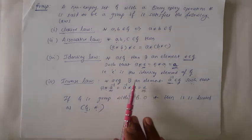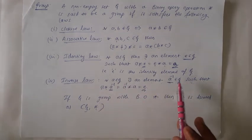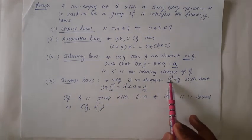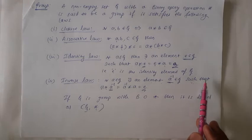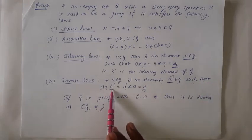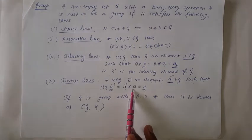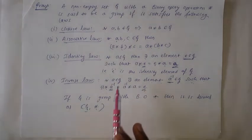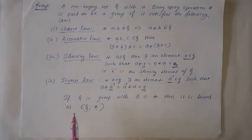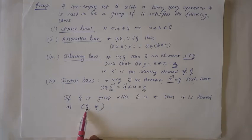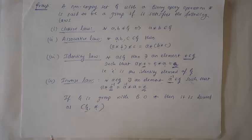Then the Inverse law: for all a belonging to G, there exists an element a-inverse belonging to G such that a star a-inverse equal to a-inverse star a is equal to e. So if all these four laws are satisfied for a non-empty set G along with the binary operation star, then G is called a group under the binary operation star.